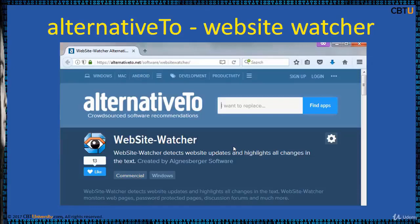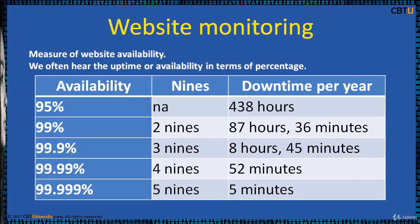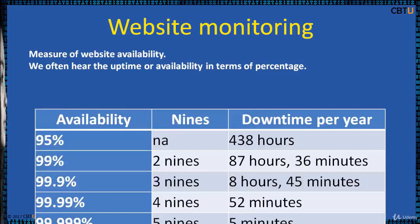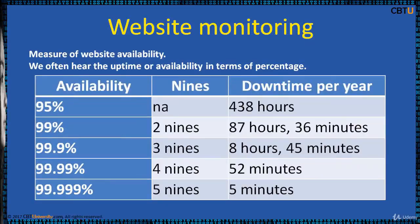There are alternatives to Website Watcher as well. Website monitoring is the measure of website availability. It is often used by businesses to ensure website uptime, performance, and functionality as expected. We often hear uptime expressed as a percentage — for example, 99% uptime means approximately 87 hours and 36 minutes, which is about 4 days of downtime in a year.